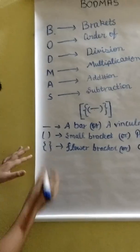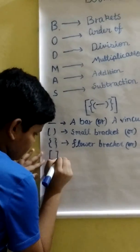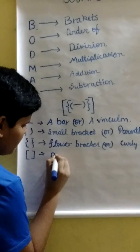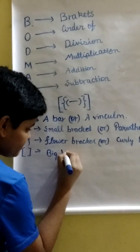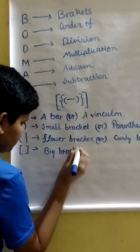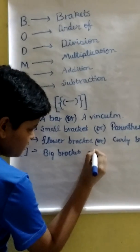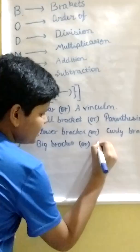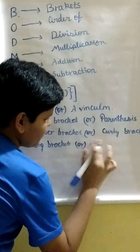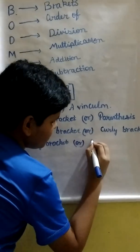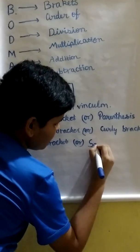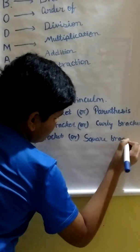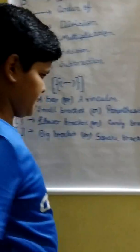And the last one. These are kind of big, so they are called big brackets. Or, if you attach them, you form a square, so we call it a square bracket.